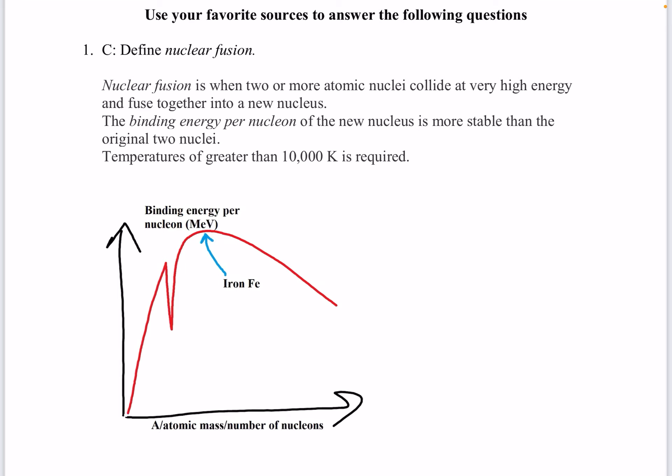So from the last video I told you, nuclear fission occurs when we're to the right of iron, like the heavier elements. Nuclear fusion occurs when we're to the left of iron, where we have lighter elements.